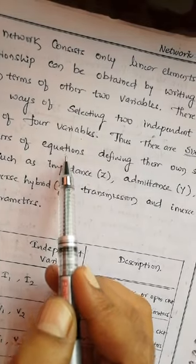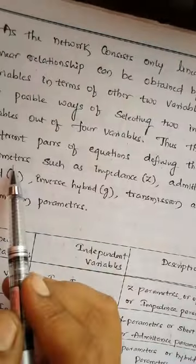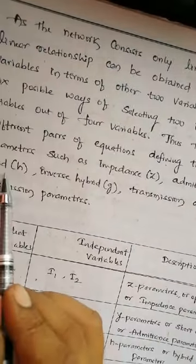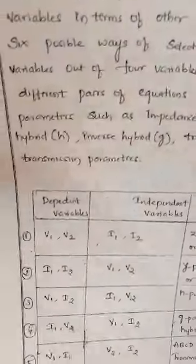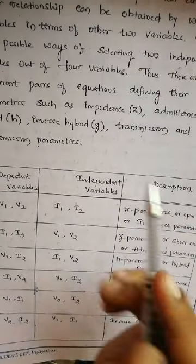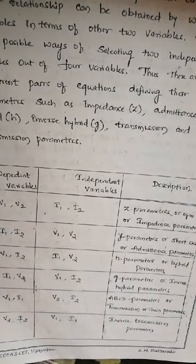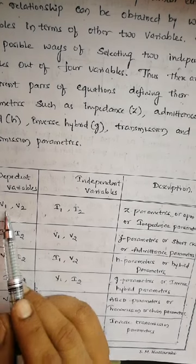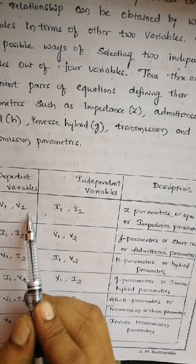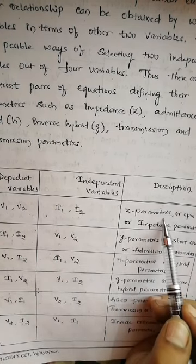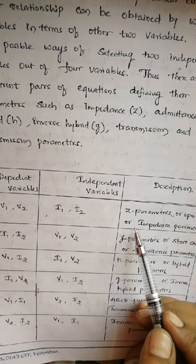Thus there are six different pairs of equations, each defining their own set of parameters: impedance Z, admittance Y, hybrid H, inverse hybrid G, transmission, and inverse transmission parameters. In the table, the first column shows dependent variables and the second column shows independent variables. If V1 and V2 are the dependent variables expressed in terms of independent variables I1 and I2, those parameters are called Z parameters, or open-circuit impedance parameters.